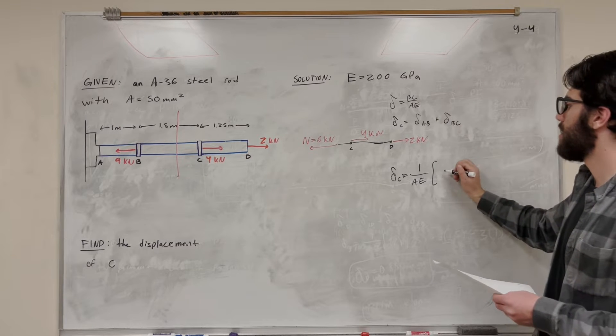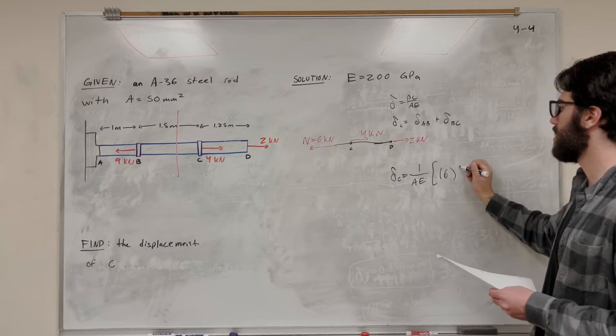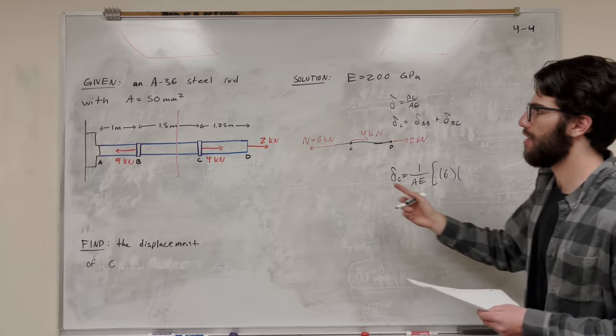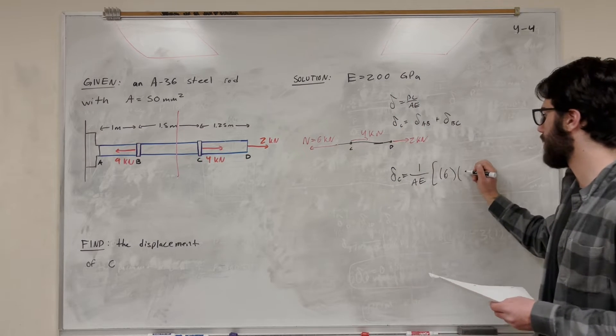So we're looking at BC now. So our equation is PL. So the force we just found is 6 kilonewtons. And the length we found of BC is 1.5 meters. So we can just plug in 1.5 here.